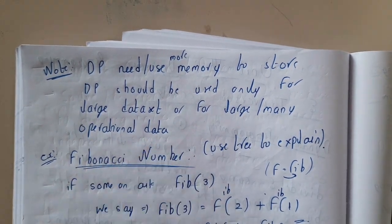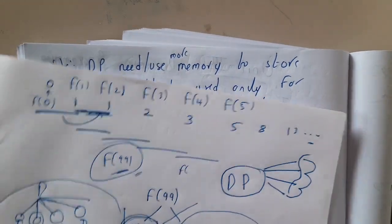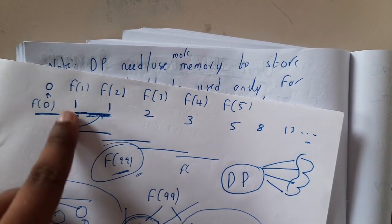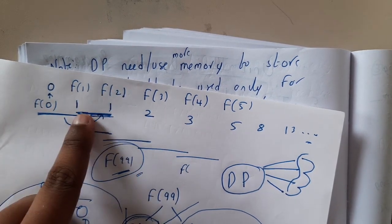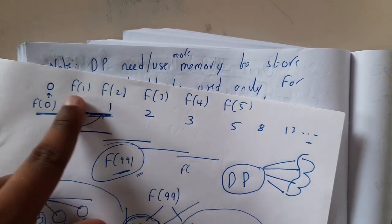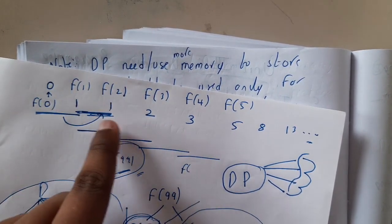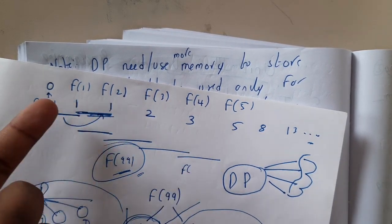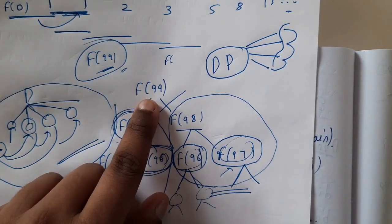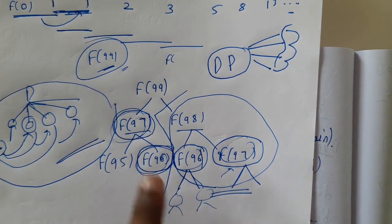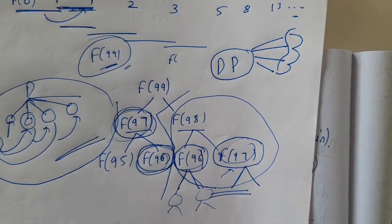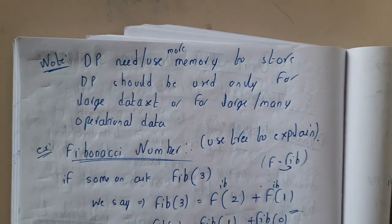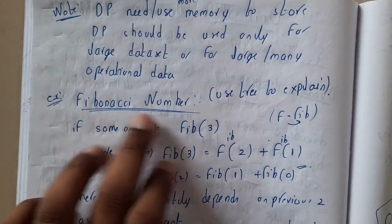If you use dynamic programming to find Fibonacci of 3, it is not useful — you get the answer in just two steps, so storing intermediate values wastes memory. But for Fibonacci of 99 you need hundreds of operations, which is exactly where dynamic programming provides its advantage.